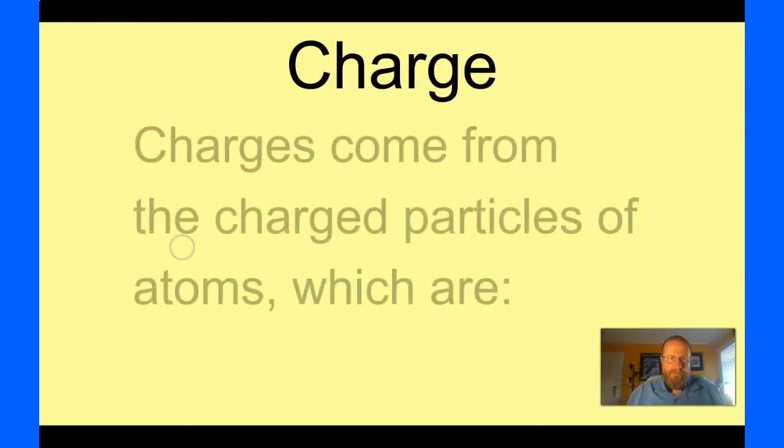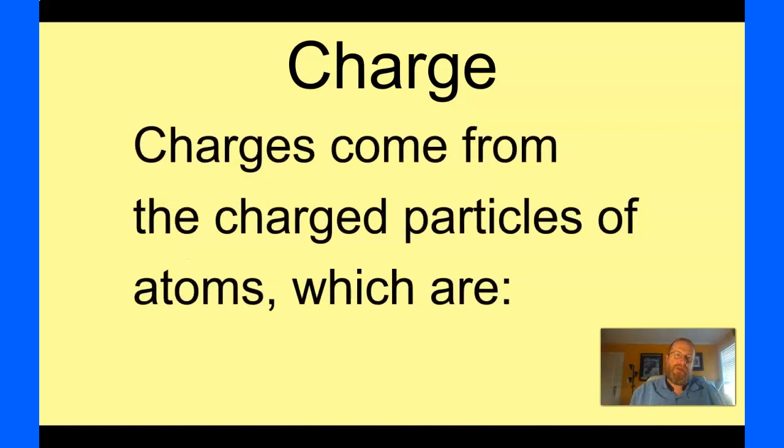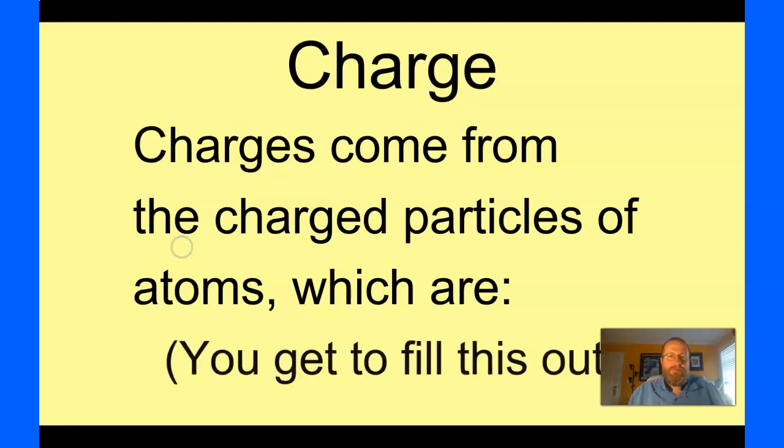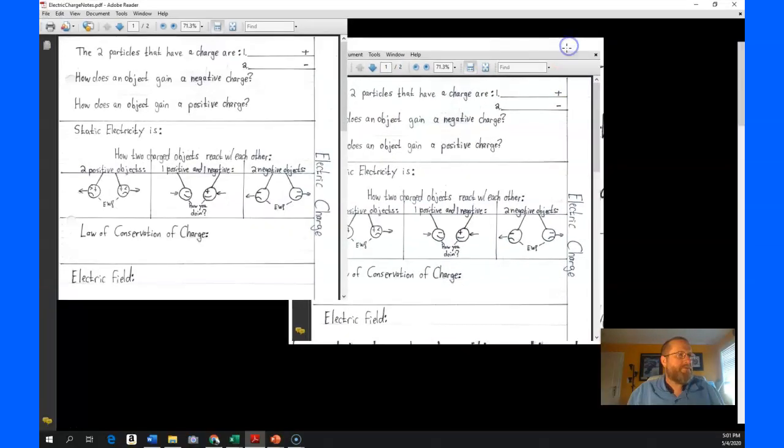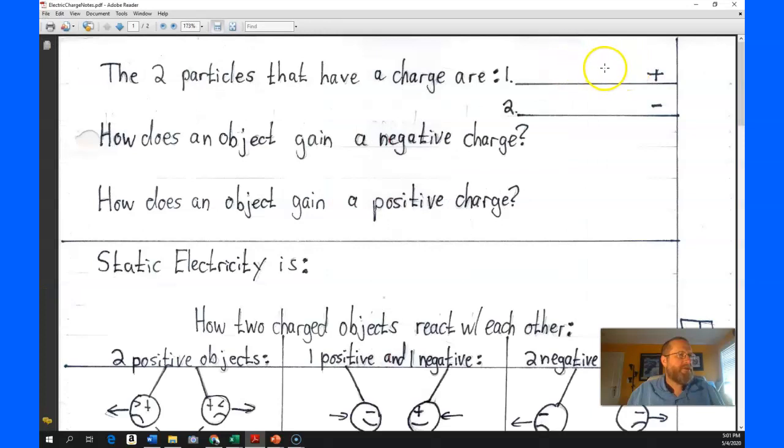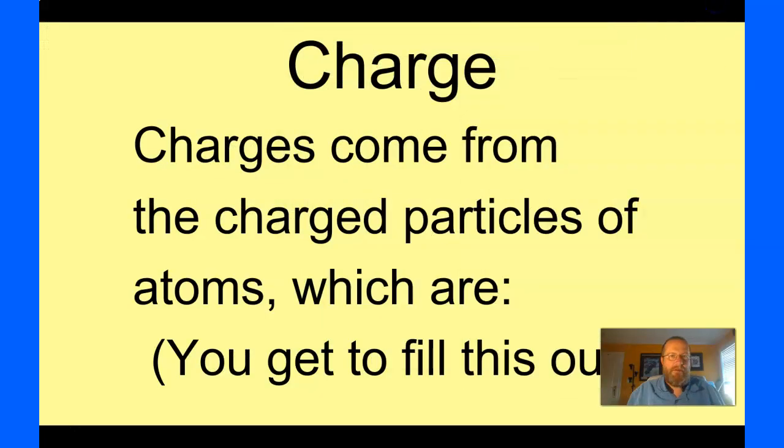You know what the charges come from. We've already talked about this during the first half of this class, chemistry stuff. Charges come from the charged particles of the atom. Now, you know what these are, but in case you've forgotten, the positive one is the proton, and the negative one is the electron. Positive one goes on that line, proton. Negative one goes on that line, electron.